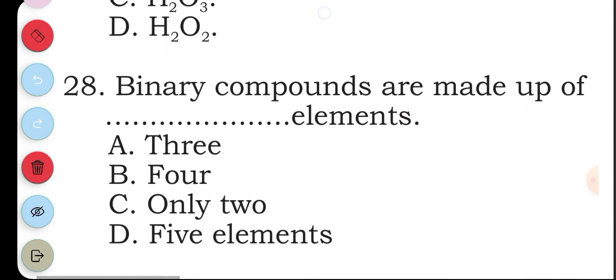Question twenty-eight: binary compounds are made up of blank elements. A three, B four, C only two, D five elements. The answer to this is C, only two.